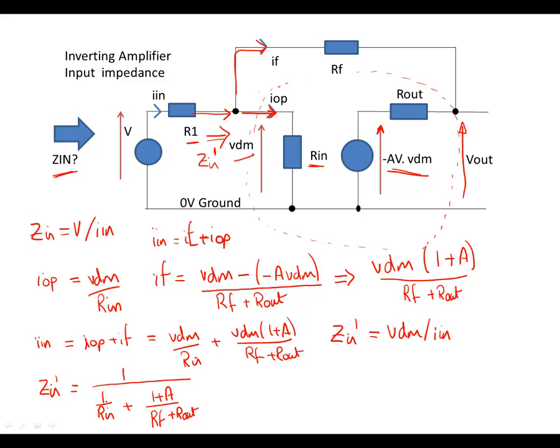And we know now that Zin is simply this value plus R1. So we've now calculated Zin for this op amp circuit is R1 plus 1 over 1 over Rin plus 1 plus A over RF plus Rout.